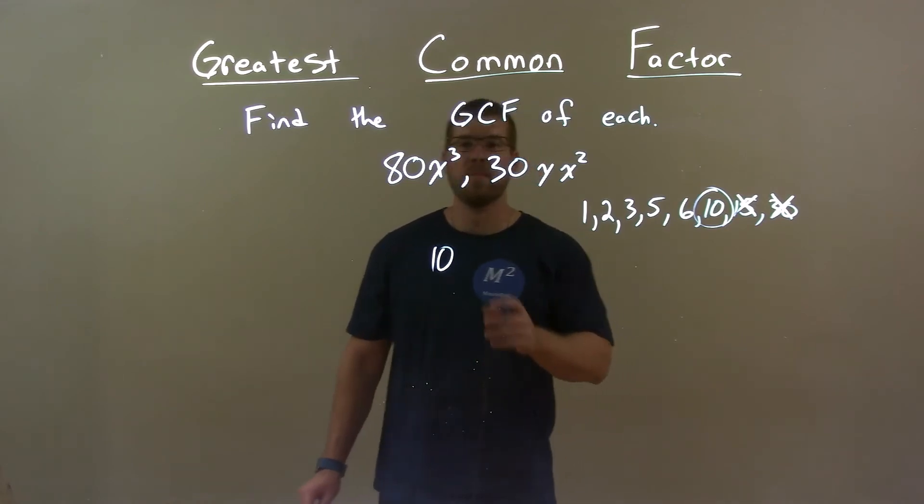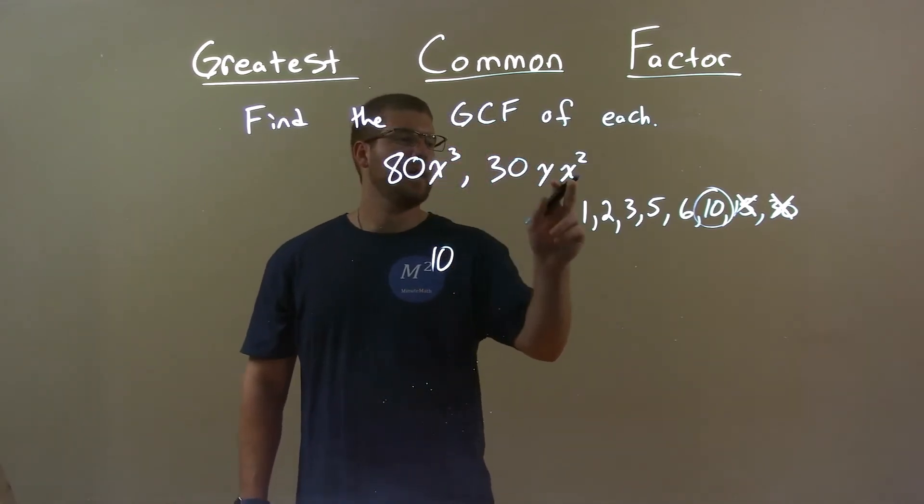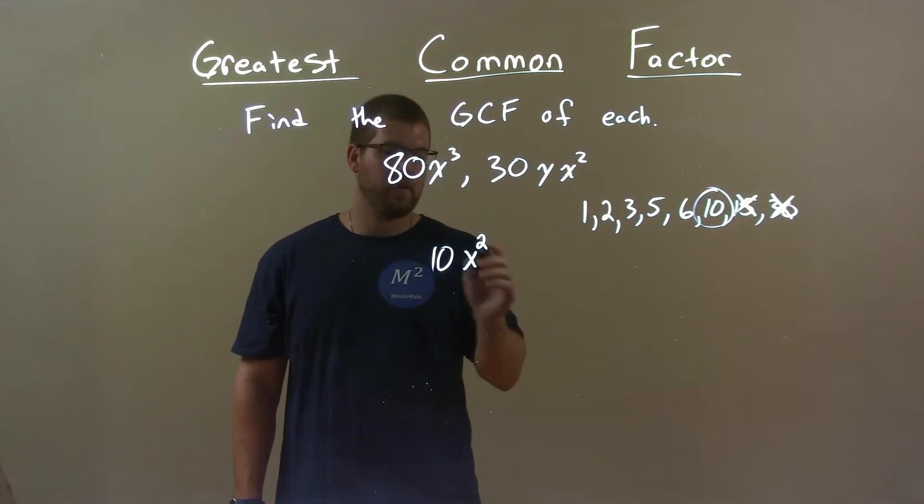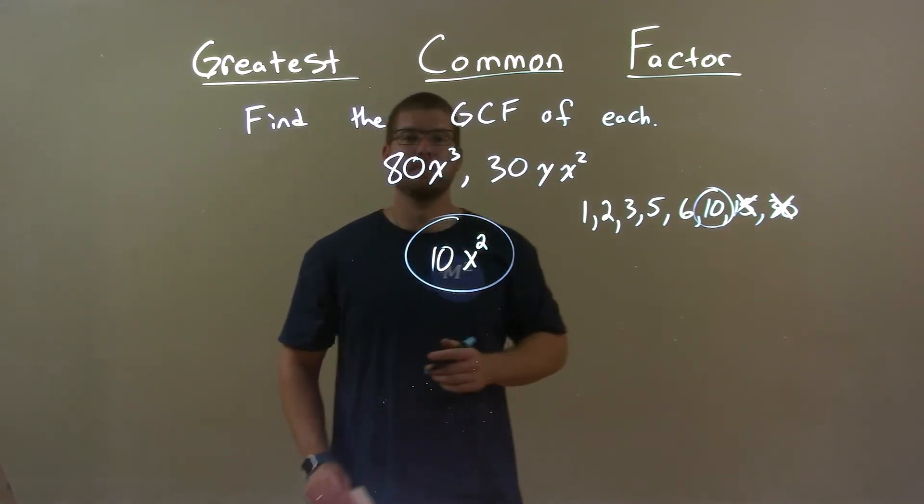Now, let's look at the variables. Well, there's three x's here and two x's here, so they both share two x's, x squared. And there's no y's here, but one y here, so no y's are shared. So, my final answer is just 10x squared.